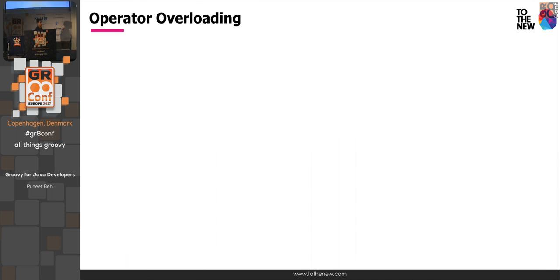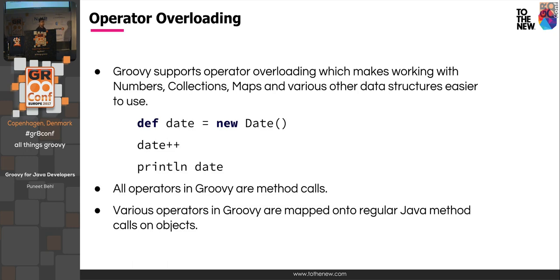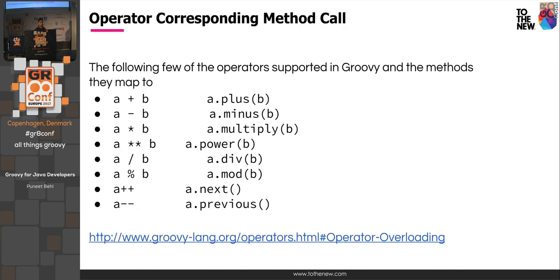Groovy also supports operator overloading, which means you can override operators — basically all operators in Groovy are method calls. So in your own class, if you override these methods you can simply say 'a + b' on that object. For a salary or amount class, you could simplify things by overriding the plus operator and call 'a + b' or 'a - b'. For a complete list, refer to the URL provided.